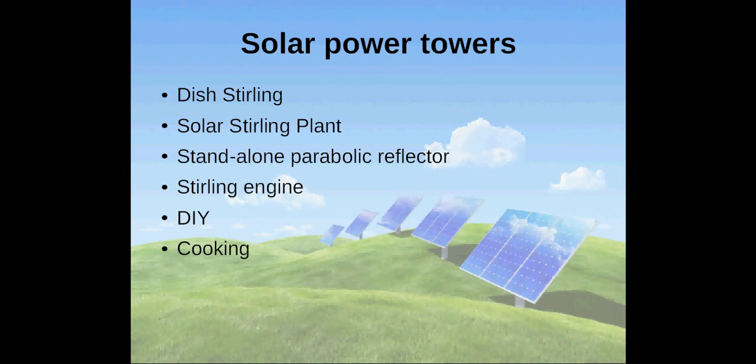Solar sterling plants can even be built at home for personal use. Instead of producing electricity, concentrated solar thermal systems can also be used for cooking. In that case, food is heated instead of liquid that drives an engine.